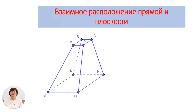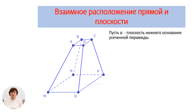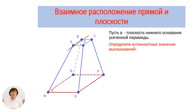Вспомним взаимное расположение прямой и плоскости. На картинке у вас усечённая пирамида. Попробуем выделить некоторые высказывания относительно прямых и плоскостей этой усечённой пирамиды. Пусть α – плоскость нижнего основания усечённой пирамиды. Определите значение истины в следующих высказываниях.